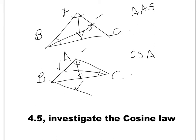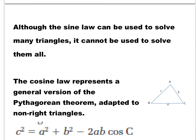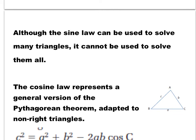So I'm going to give you the formula for cosine law. Although the sine law can be used for a lot of triangles, it is not going to solve all of them. The only cases you can use sine law are AAS — angle, angle, side — or SSA — side, side, angle. But remember, the side has to be in front of the angle, or the angle has to be in front of the side. Otherwise, you cannot use sine law.